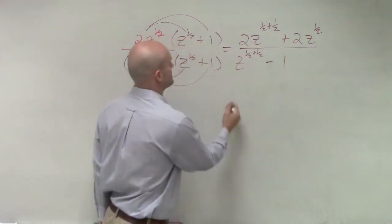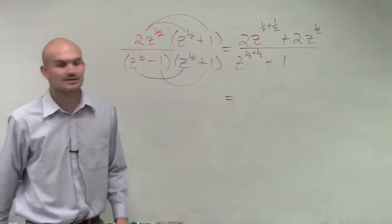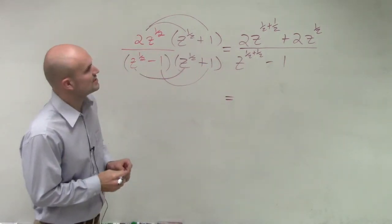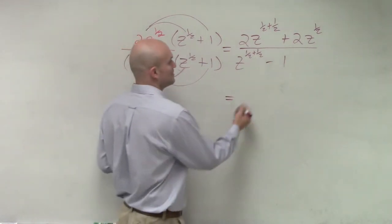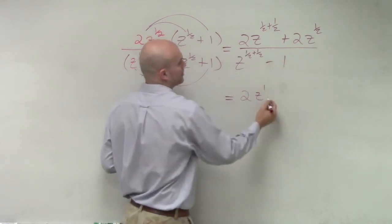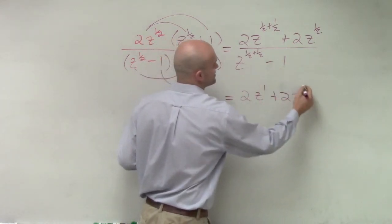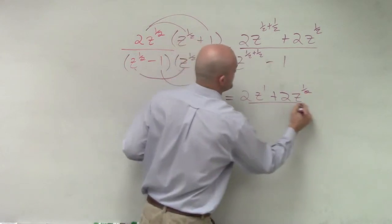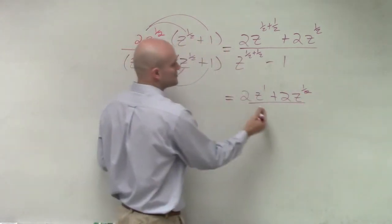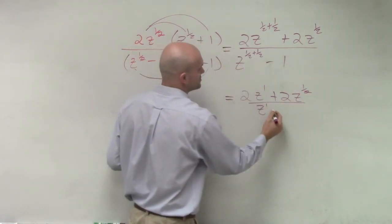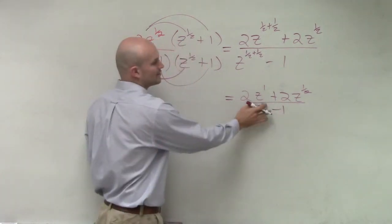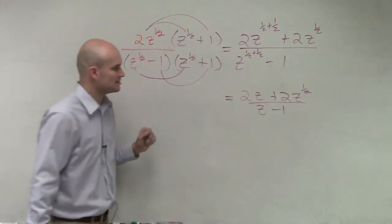Now I go ahead and simplify. So 2 to the z to the 1 half plus 1 half is going to be 1 plus 2 to the z to the 1 half, divided by 1 half plus 1 half is 1, so z to the first power minus 1. Now we don't need to write these first powers up there, so I'll leave it like that.